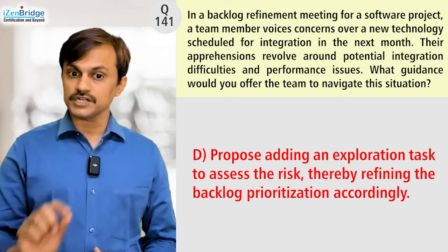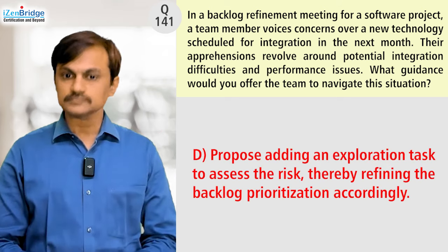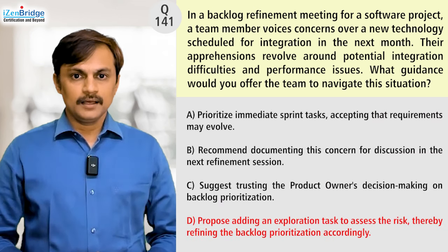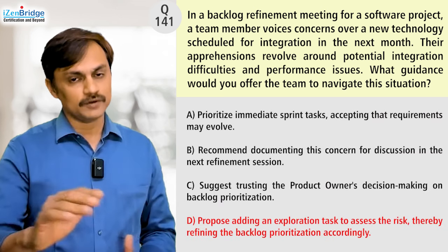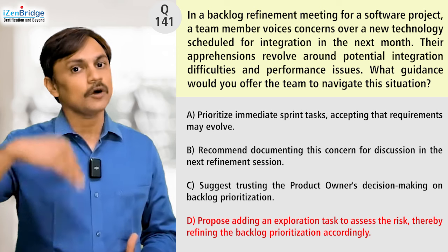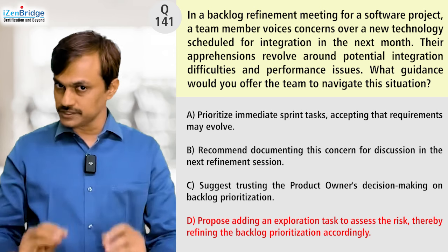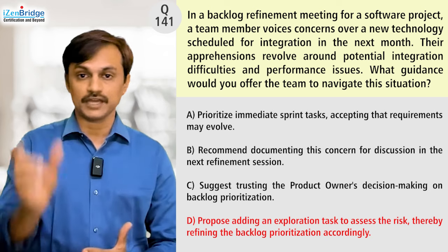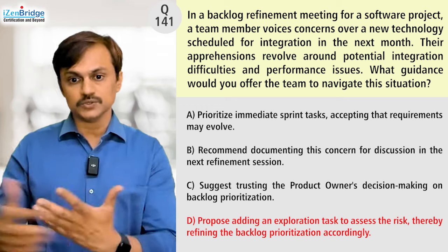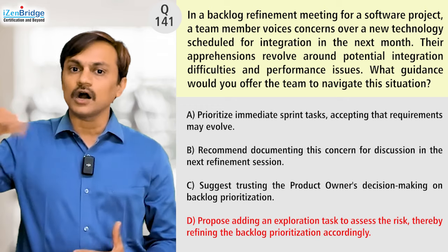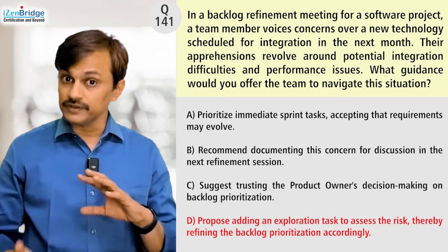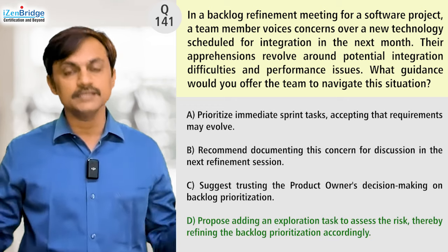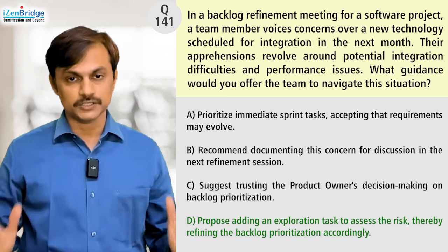Option D: propose adding an exploration task to assess the risk, thereby refining the backlog prioritization accordingly. This looks good — it's a more proactive approach. It includes the documentation aspect from Option B, but goes further by adding a technical exploration item into the backlog. We then refine and reprioritize the backlog based on what we learn, responding to the risk properly. This is the right option.